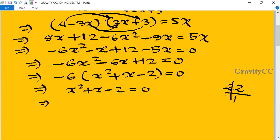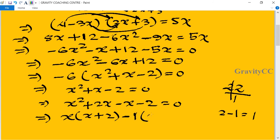Now we will factorize. We need to split the middle term: 2 can be written as 2 times 1. So x² + 2x - x - 2 = 0. Taking common from first two terms: x(x+2), and from last two terms: -1(x+2). So (x+2)(x-1) = 0.